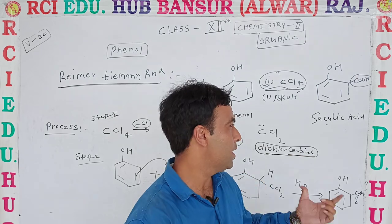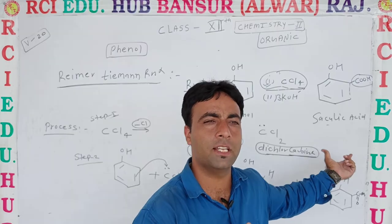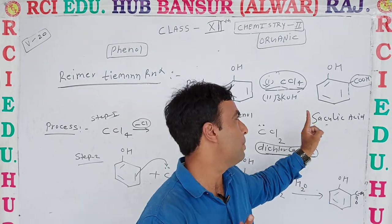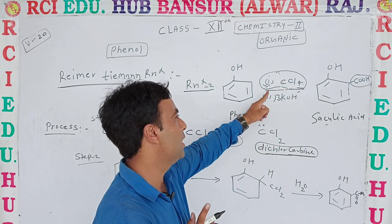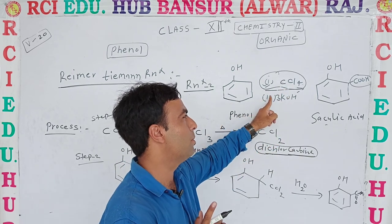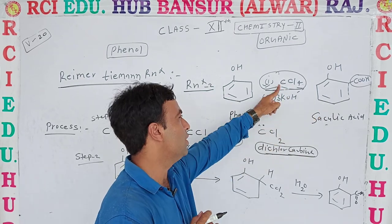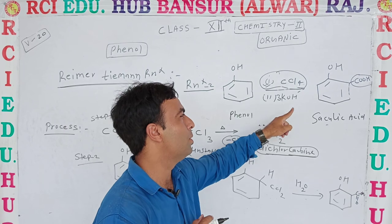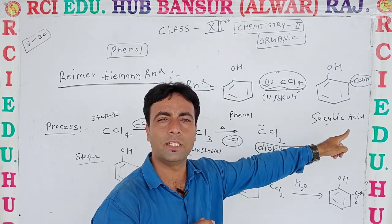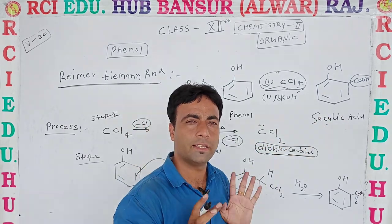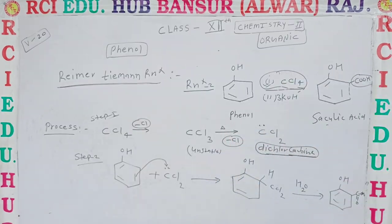In this reaction we see two types based on the reagents: if we use CHCl3, formation of aldehyde (salicylaldehyde); and if we use CCl4, formation of carboxylic acid (salicylic acid). Thanks — see you in the next class.